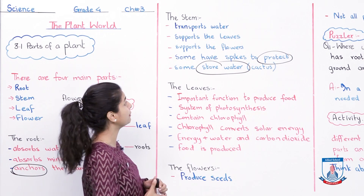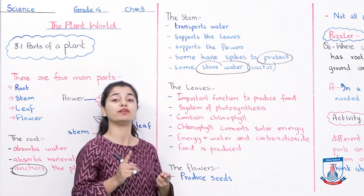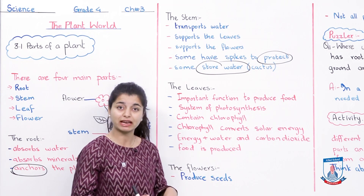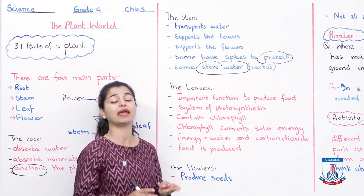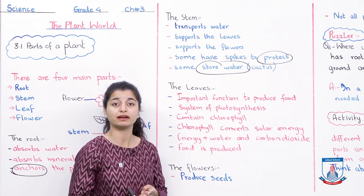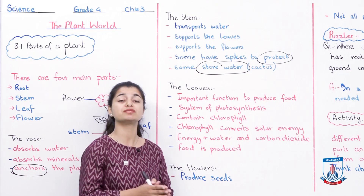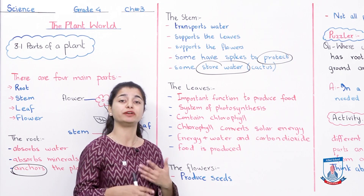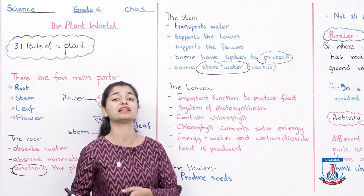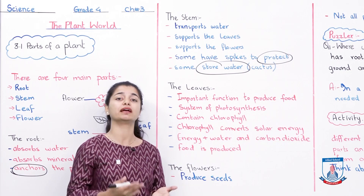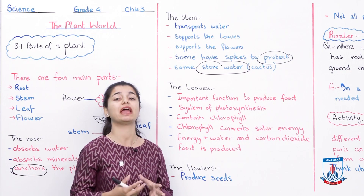So looking at what the stem does: it gives support to leaves and flowers, it transports water and minerals, it helps store water in some plants like cactus, and it gives protection to some plants through spikes. The stem performs different actions and helps the plant in different ways.